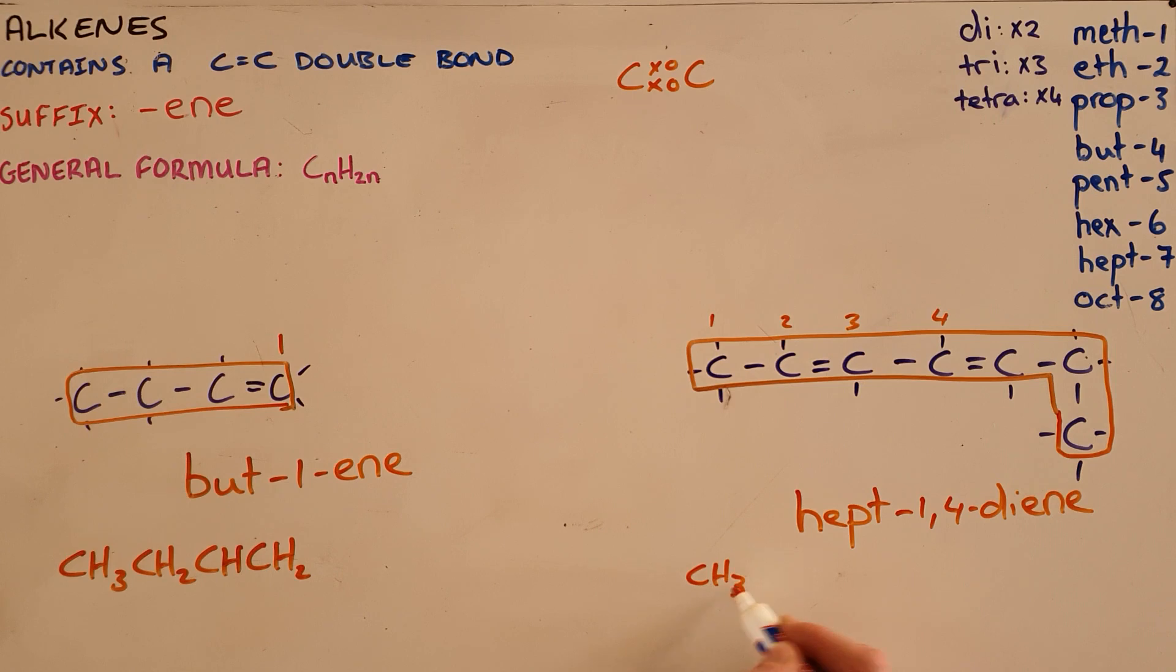The same pattern here where we say this is CH3-CH followed by CH. We can see each of those carbons is one bond short, followed by another CH-CH, then CH2, then CH3.